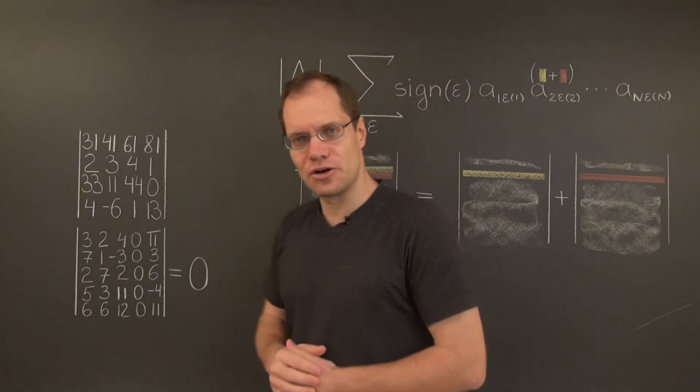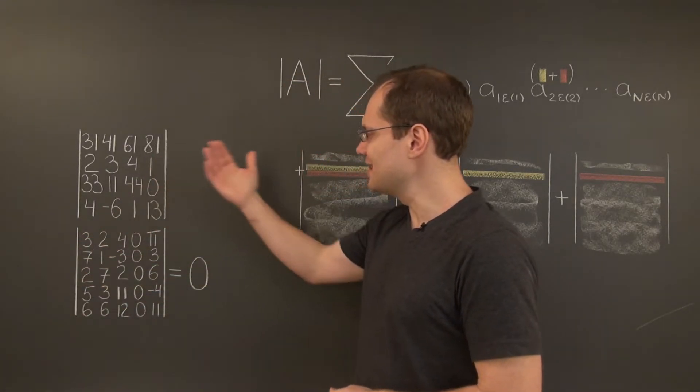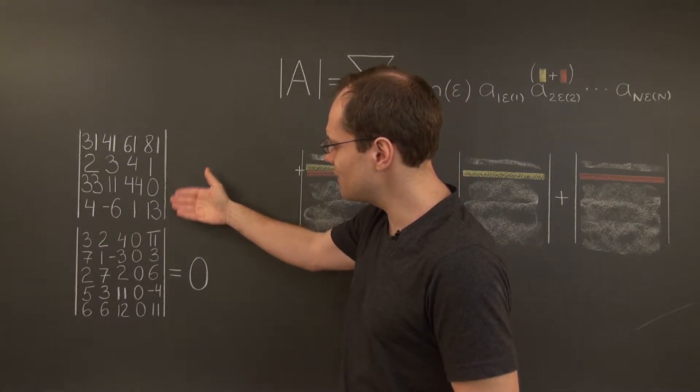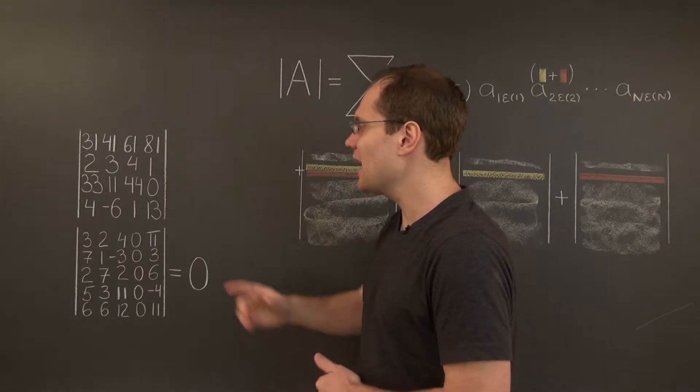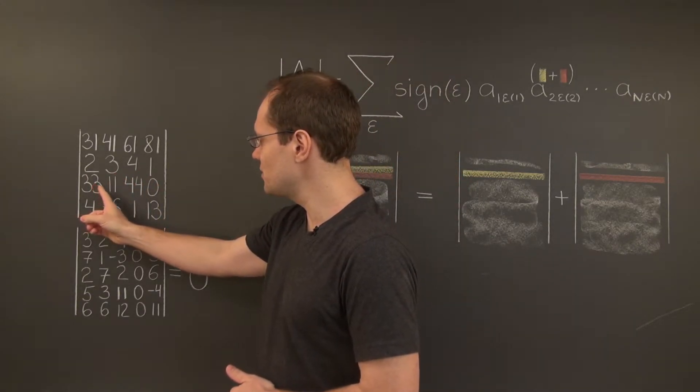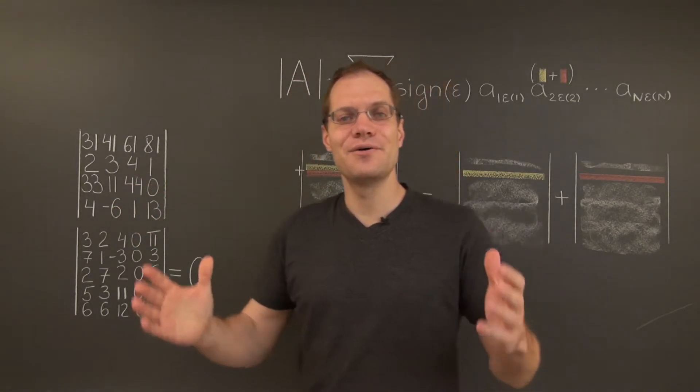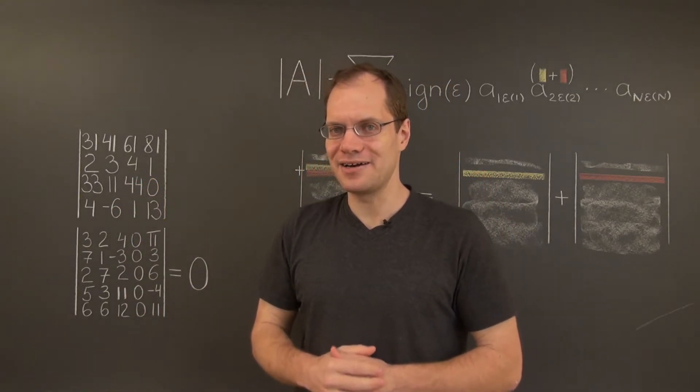Therefore this determinant equals 11 times the determinant of the matrix whose first, second, and fourth rows are the same, and the third row is 3, 1, 4, 0. So there you go, that's the second part of linearity.